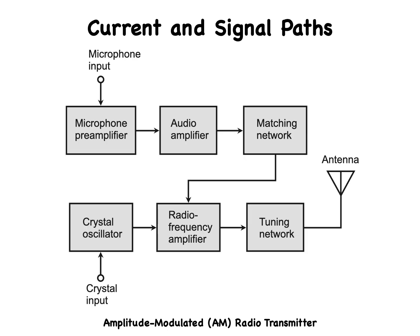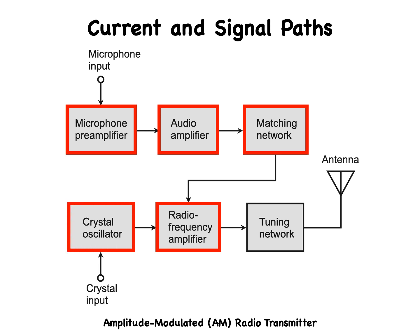Here is another block diagram of an AM radio transmitter. The microphone pre-amplifier stage goes to the input of the audio amplifier stage, note the direction of the arrows. The output of the audio amplifier goes to the matching network, which in turn goes to the RF amplifier section. The crystal oscillator is also connected to the RF amplifier section, whose output leads into the RF tuning network.